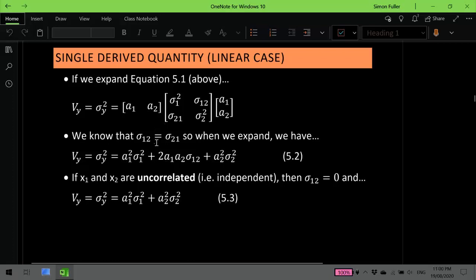Now, of course, we know that the covariance of measurement 1 with measurement 2 is the same as the covariance of measurement 2 with measurement 1, which is why we get this 2a₁a₂ covariance here.